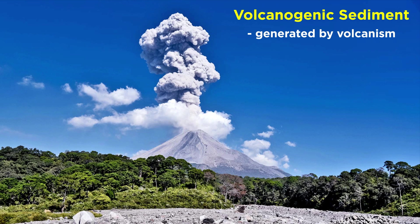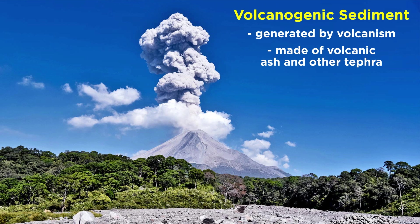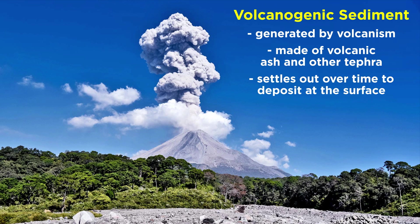A subgroup of terrigenous sediment, called volcanogenic, is directly generated by volcanism and is mainly composed of volcanic ash and other tephra that is spewed into the atmosphere, settling out with time to be deposited at the surface. This type of sediment tends to be rich in microscopic feldspar grains and particles of glass.